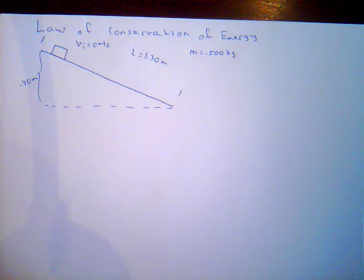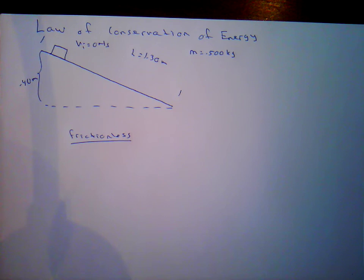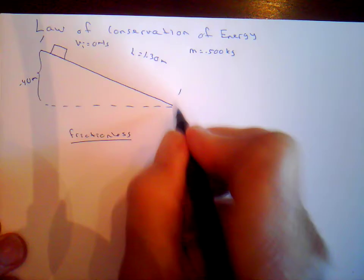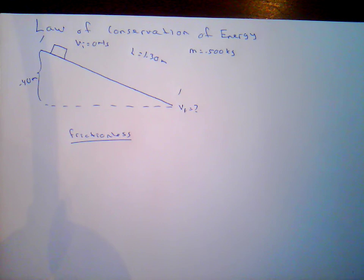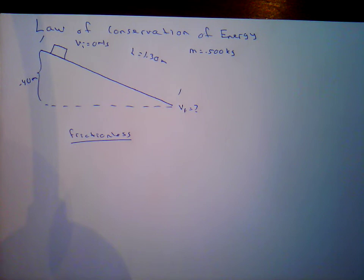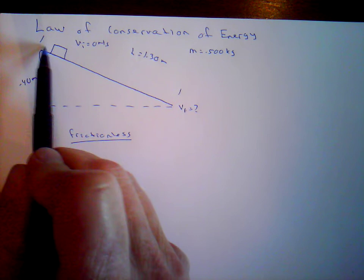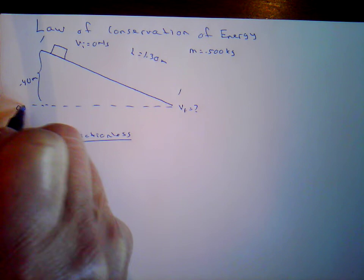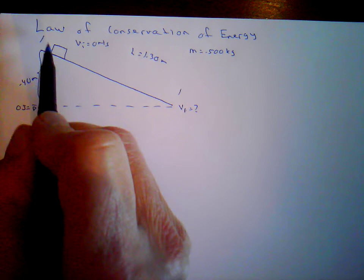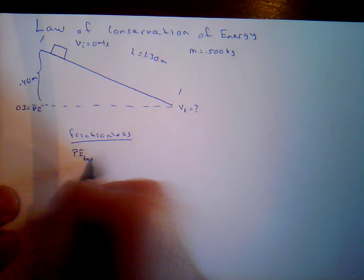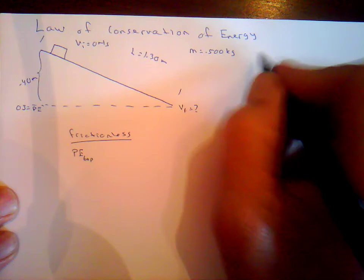We're going to do this both with and without friction. We want to determine the final velocity of the object at the bottom of the path. Using energy relationships, we simply understand that the total energy you start with equals the total energy you end with. At the top, the object has potential energy and no kinetic energy. At the bottom, it has no potential energy and only kinetic energy. So potential energy at the top equals kinetic energy at the bottom: initial KE + initial PE = final KE + final PE.